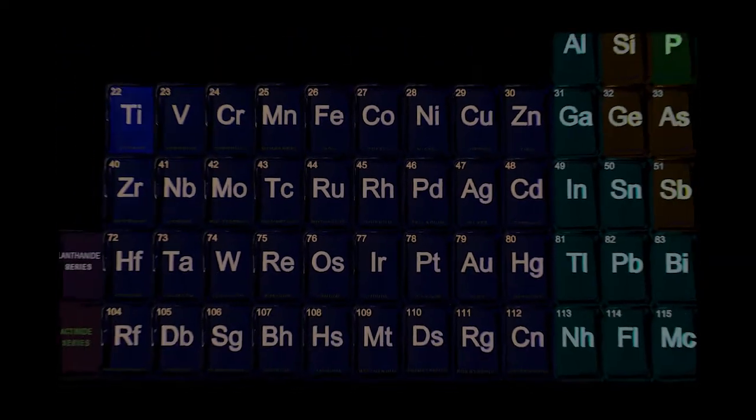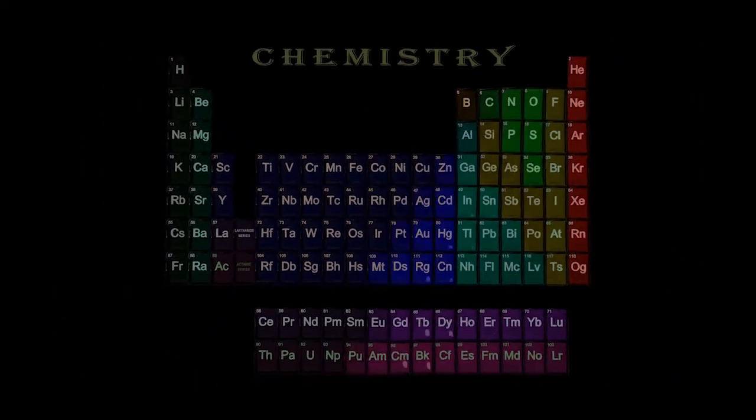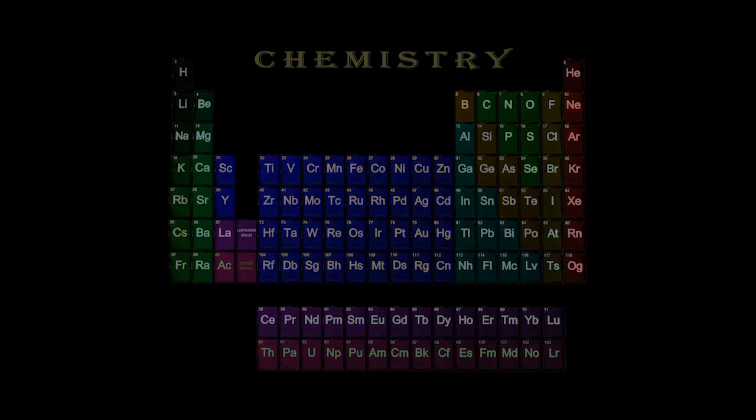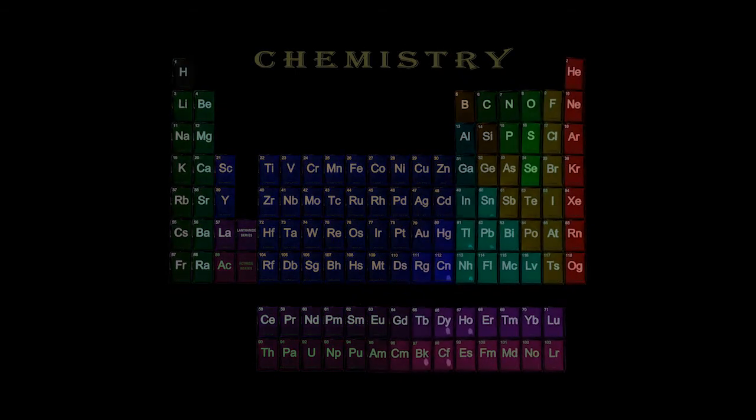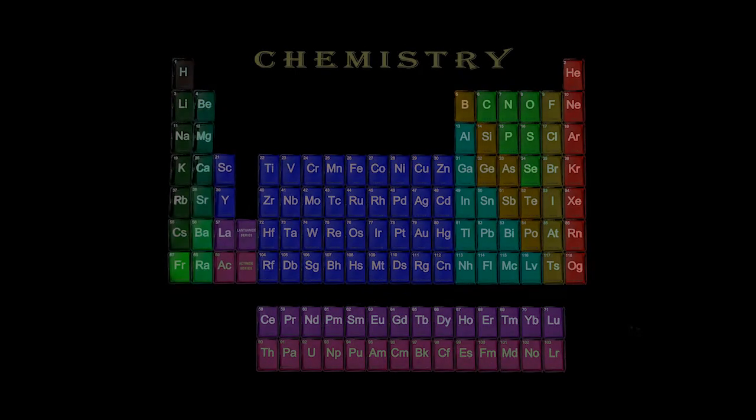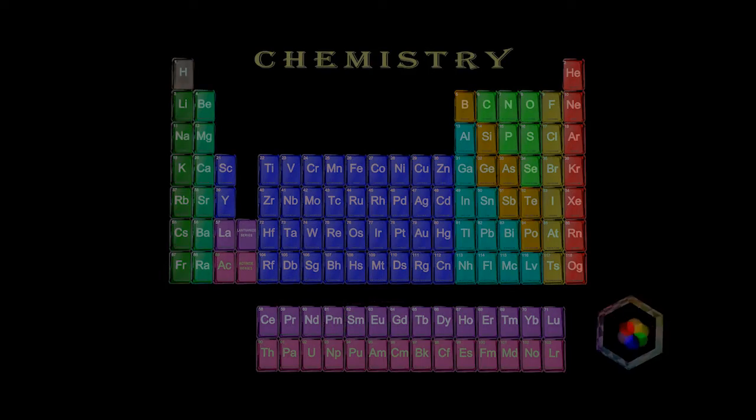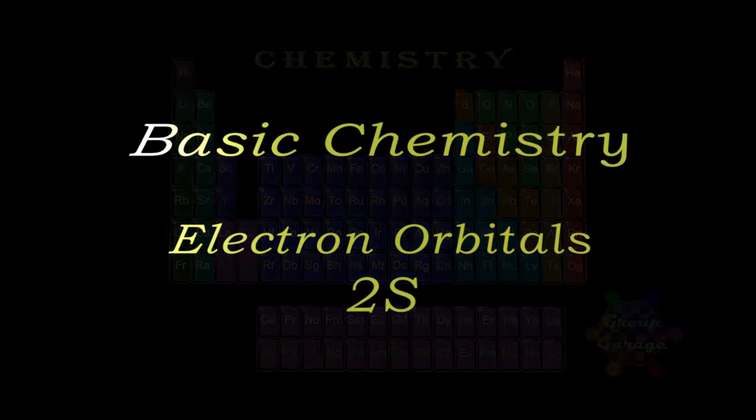Welcome again to our chemistry video series in which we describe how electron orbitals are filled and the basic shape of those orbitals. Last video covered the first two electrons in the 1s shell, so let's dive into this video in the second principal energy level and look at the two electrons in the 2s subshell.